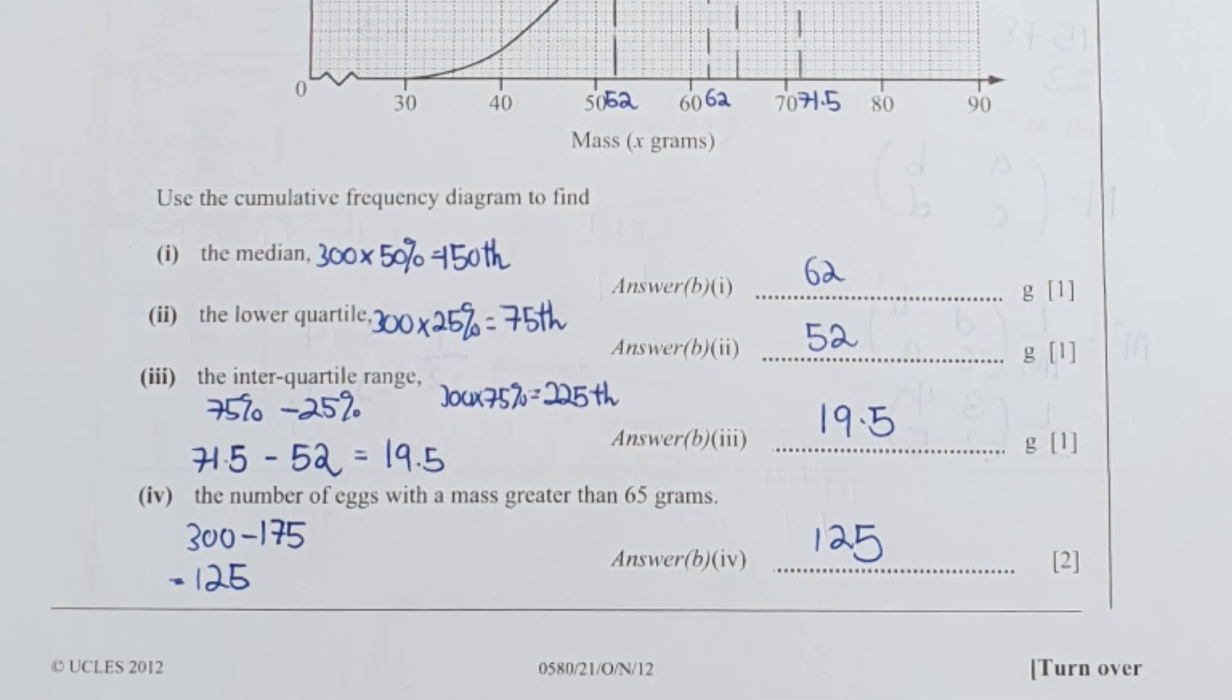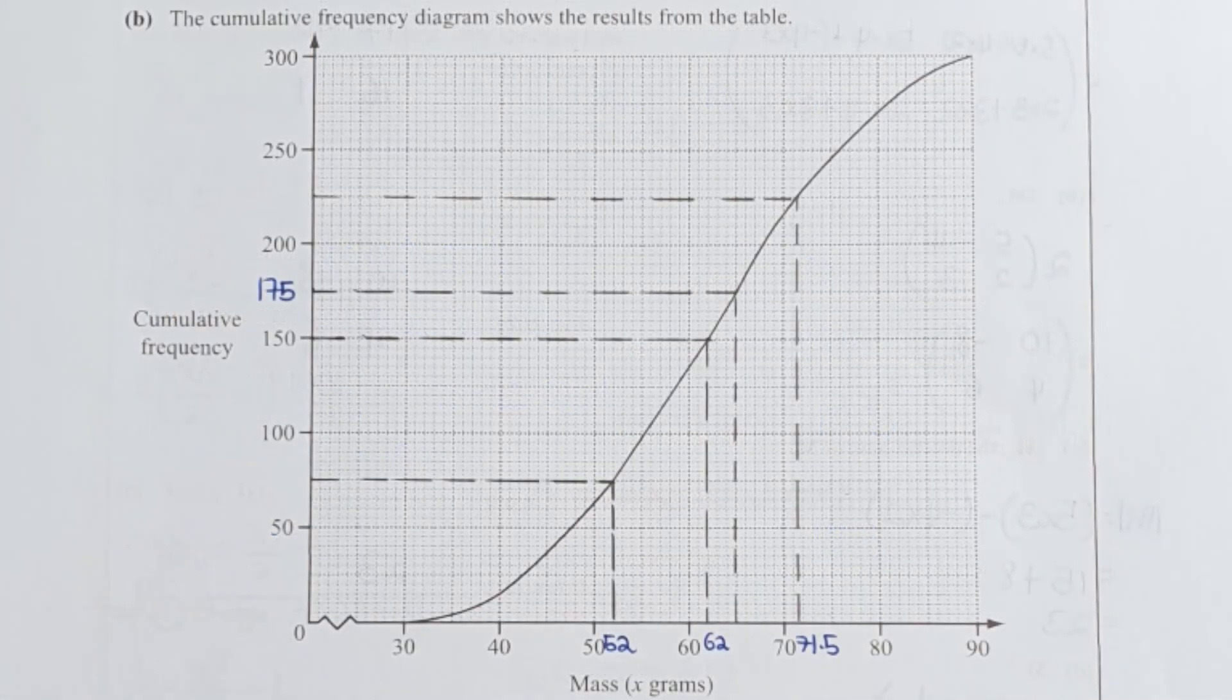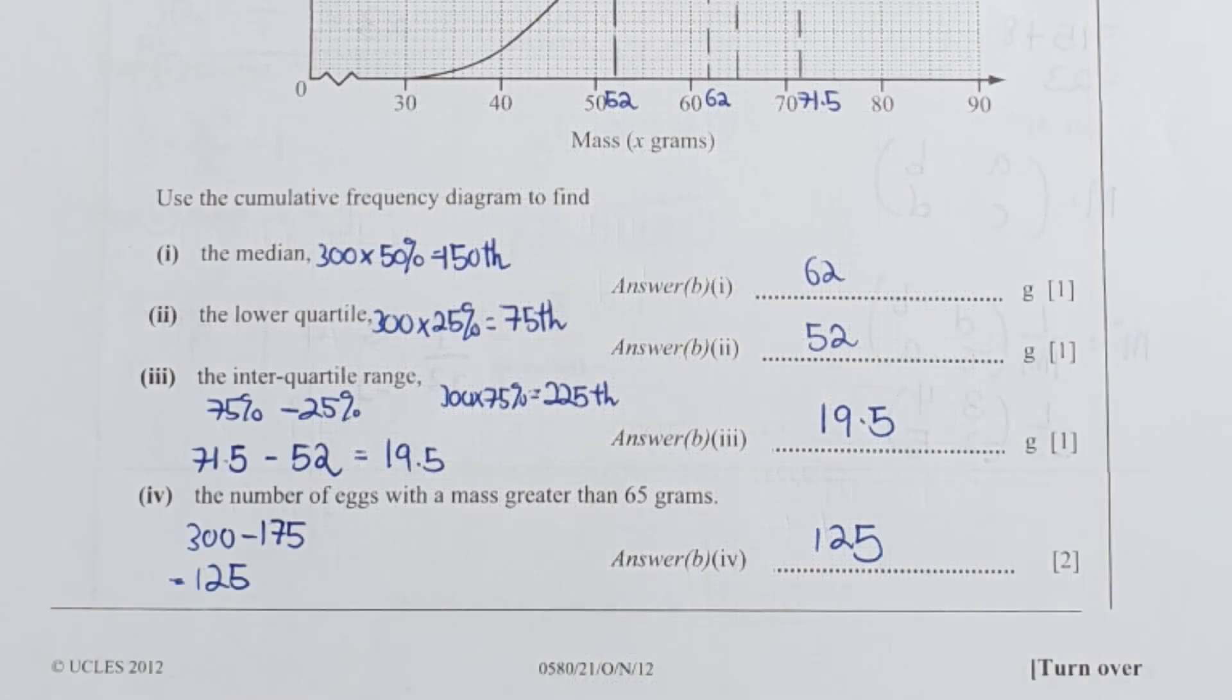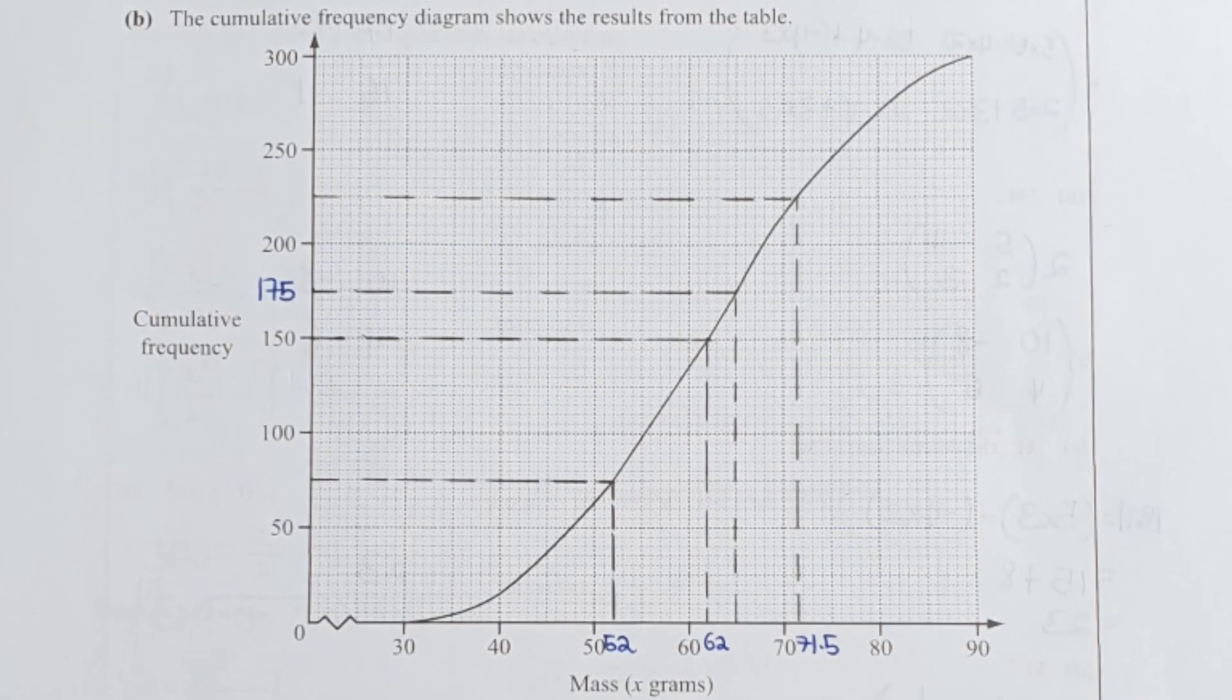For the next part, median. So 300 times 50%, which means you are required to identify the value of the 150th. From 150, I drew it down, I get the result as 62. But for the lower quartile, 300 times 25% equals 75th. So from the 75th, I drew it down, I get the result of 52.